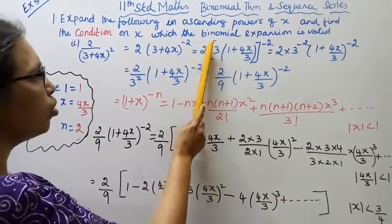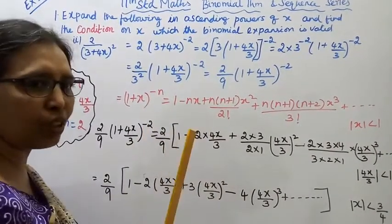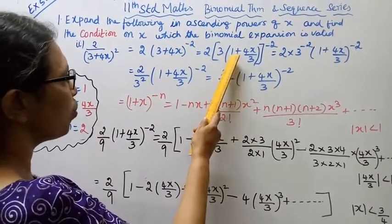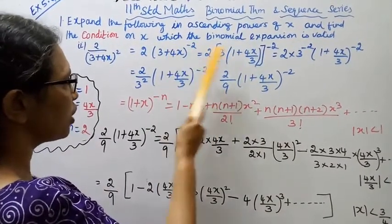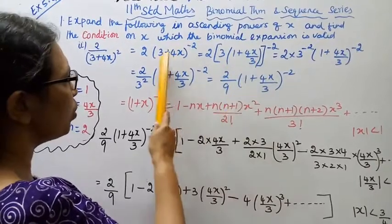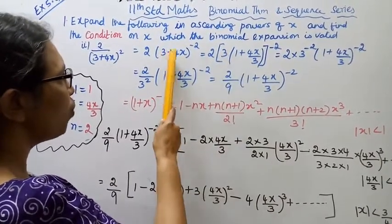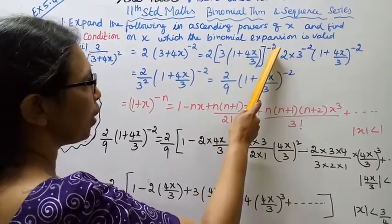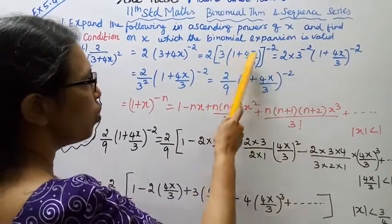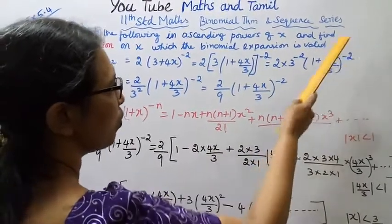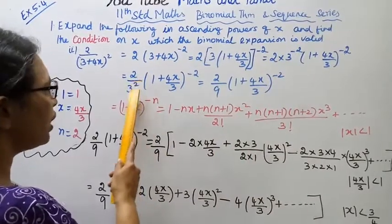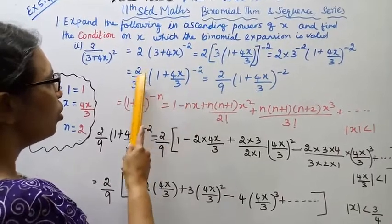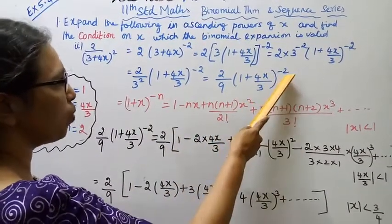We want to convert this to the (1+x)^(-n) formula form. Factor out 3 from (3+4x): we get 3(1 + 4x/3). So (3+4x)^(-2) becomes 3^(-2) × (1 + 4x/3)^(-2), which gives 2/9 × (1 + 4x/3)^(-2).